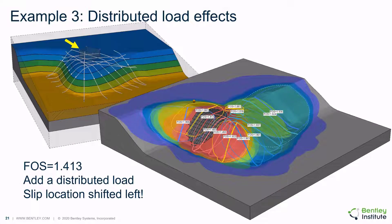In this scenario, we add a distributed load to the top of the slope as shown by the yellow arrow. This additional load is considered by the multi-plane analysis and causes the location of the critical slip surface to shift to the left, and the factor of safety to decrease to 1.413. This example indicates how a spatially finite distributed load in 3D can affect the location of the spatial critical slip surface.